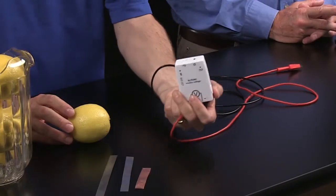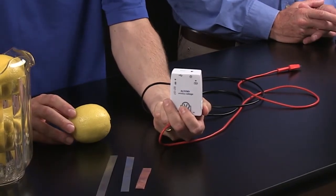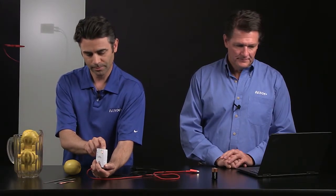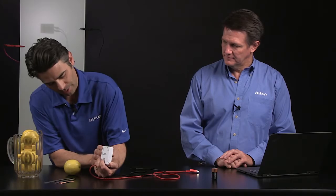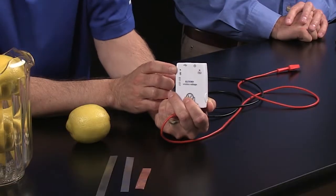And we're going to use a lemon battery to introduce electrochemistry using the wireless voltage sensor. So, to do this I'm going to turn my wireless voltage sensor on. And now that it's on, the red Bluetooth indicator is blinking, indicating that it's ready to pair.